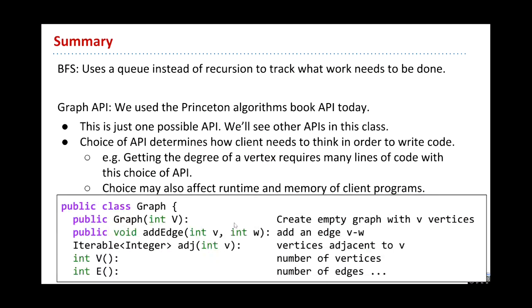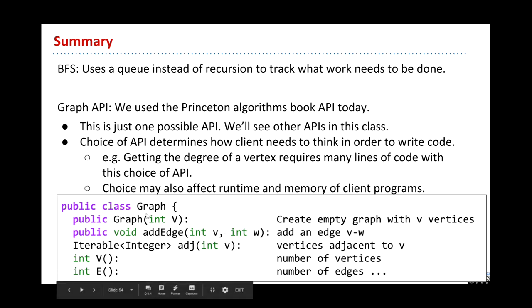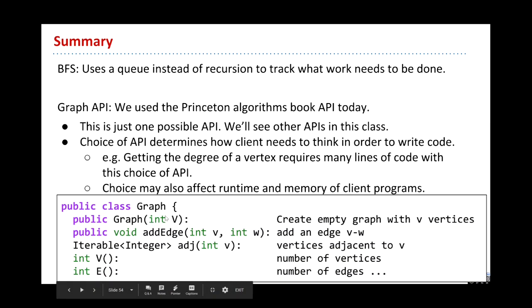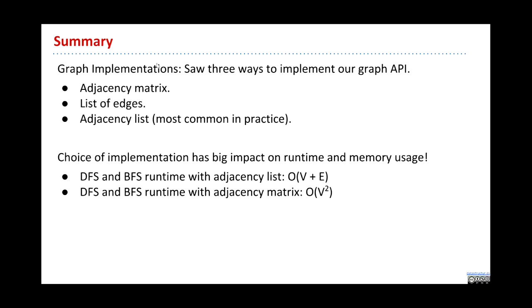To summarize: we saw BFS as our new algorithm, and we made two important choices. First, graph API—I showed you the Princeton API, but there are many other possible ways. You'll get your own choices on homework 4. Second, implementations—we saw three: adjacency matrix, edge list, and adjacency list. We're always going to use adjacency lists. Your homework is to deeply understand these runtimes. On Friday we'll be talking about shortest paths, which is what you'll need for homework 4. Good luck on the project and have a good spring break!